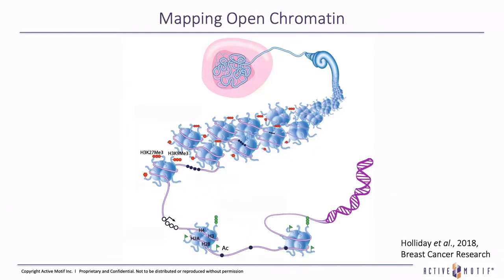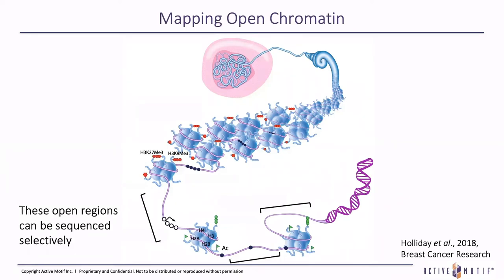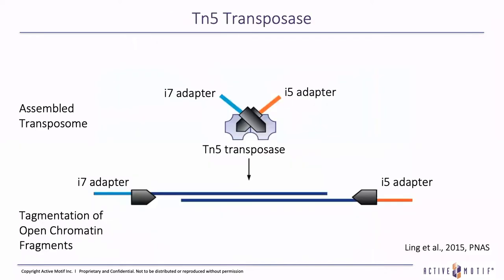Open regions are active regions, and if a promoter is open, the gene it controls is being expressed. These open regions can be selectively sequenced to build a library of active loci. TN5-transposase is the enzyme we use in ATAC-seq. It's been modified so that it cuts and ligates adapters to all genomic DNA that it can access — that is the open chromatin — building a library.